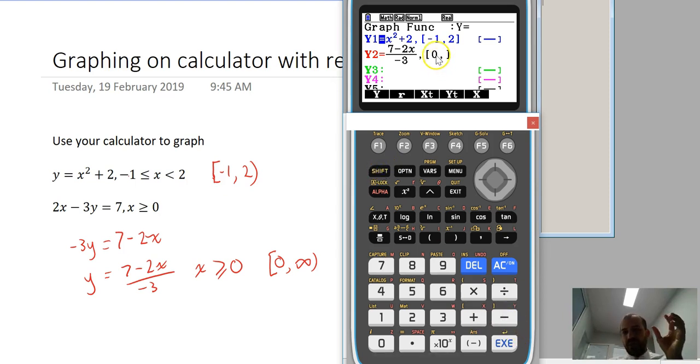So what it says is the domain is restricted to between 0 and no restriction. It just goes on forever. So we'll draw that one.